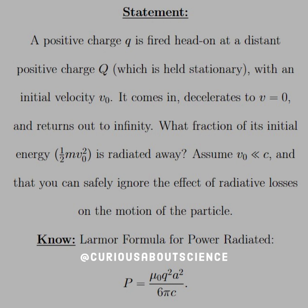What fraction of its initial energy, one-half mV0 squared, is radiated away? Notice that the energy here is in the form of kinetic. Assume that V0 is much less than C, and that you can safely ignore the effect of radiative losses, as we saw last question, on the motion of the particle. Very small with the radiative losses.